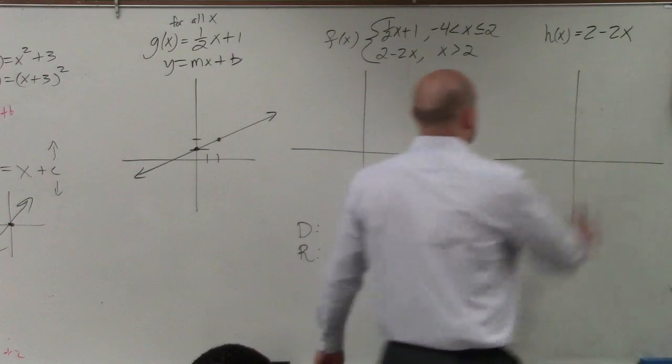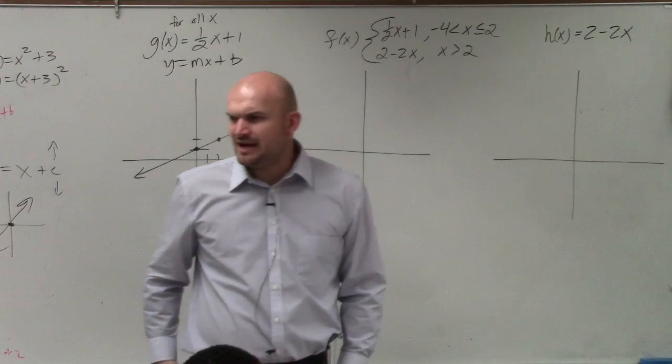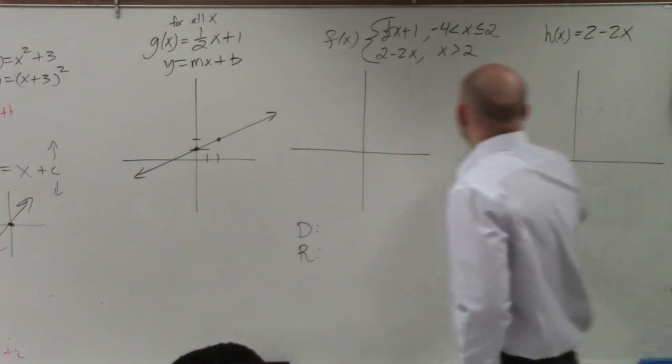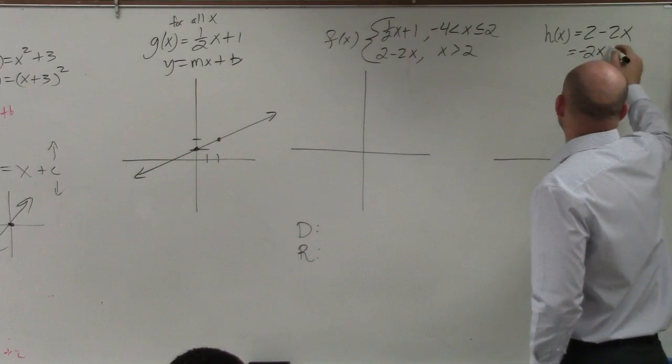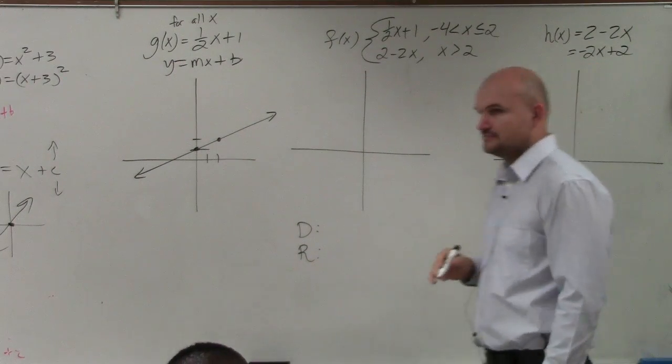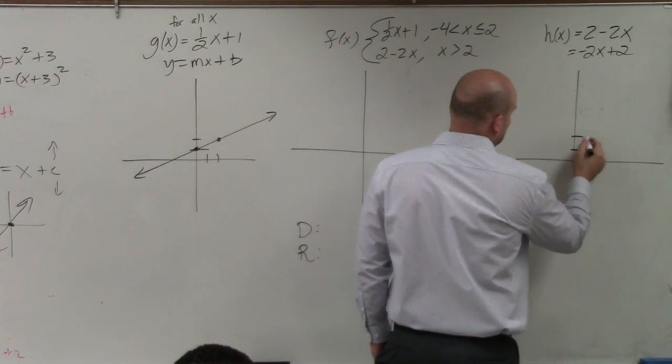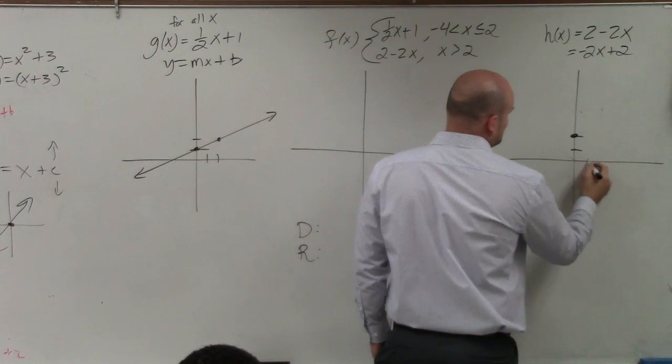Now, I go over here, and I need to graph y equals negative 2x minus 2. Now, some of you might have an issue with this if it's not in slope-intercept form. So I'd recommend rewriting it as negative 2x plus negative 2. Now, you guys can see that this graph goes up to 2 as my y-intercept and goes down 2 to the right 1.